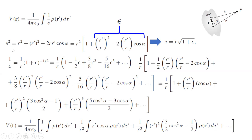Substituting 1/script-r back into the potential integral, we get a series in powers of 1/r: one term in 1/r, one in 1/r², one in 1/r³, and so forth — just like the series c₁/r + c₂/r² + c₃/r³ + … we introduced at the beginning. We've now identified what those coefficients must be: c₁ from the monopole integral, c₂ from the dipole integral, c₃ from the quadrupole integral, and so forth.